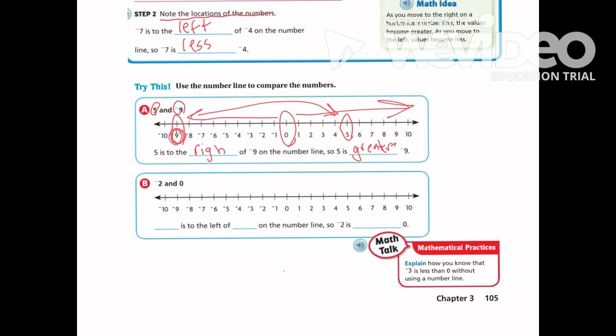So negative 9 is smaller than negative 8, and negative 7, and negative 6, and negative 5, and so on.